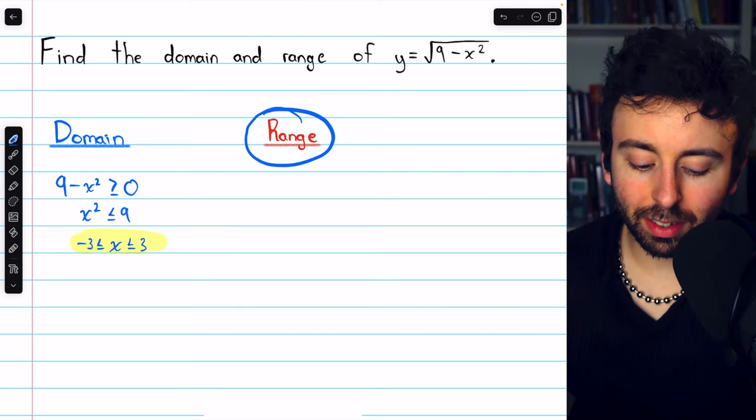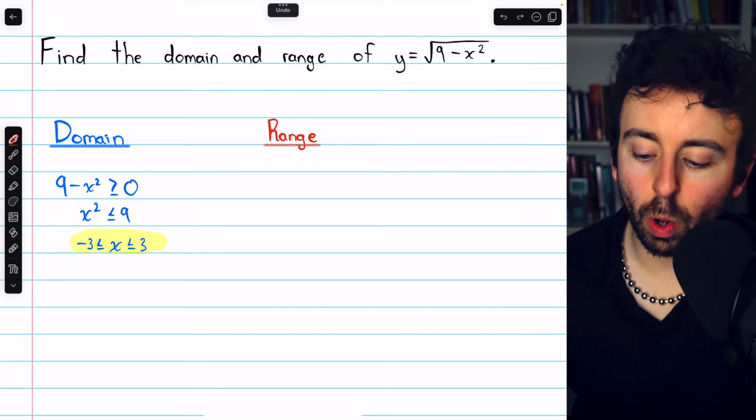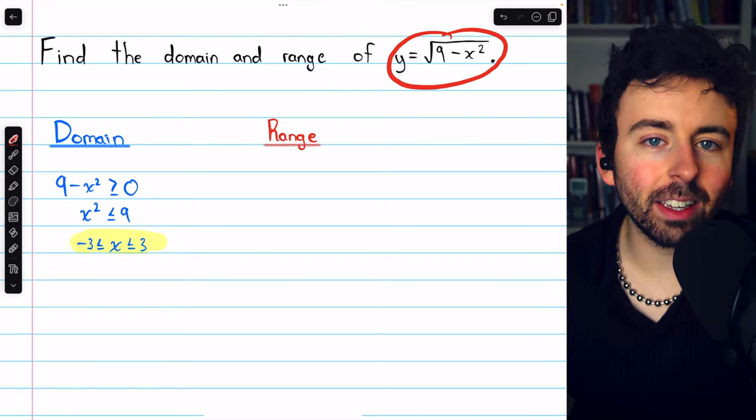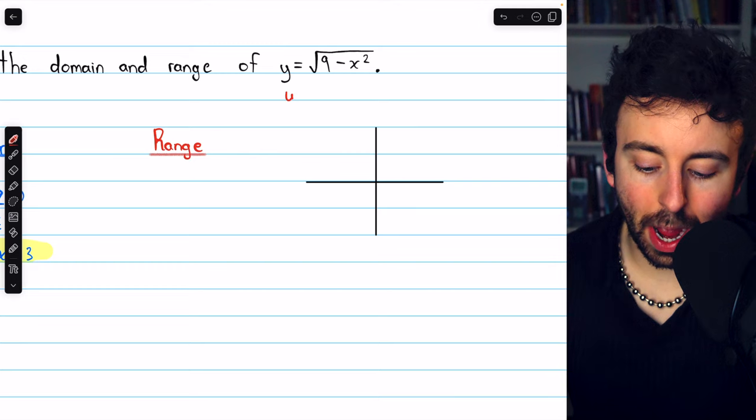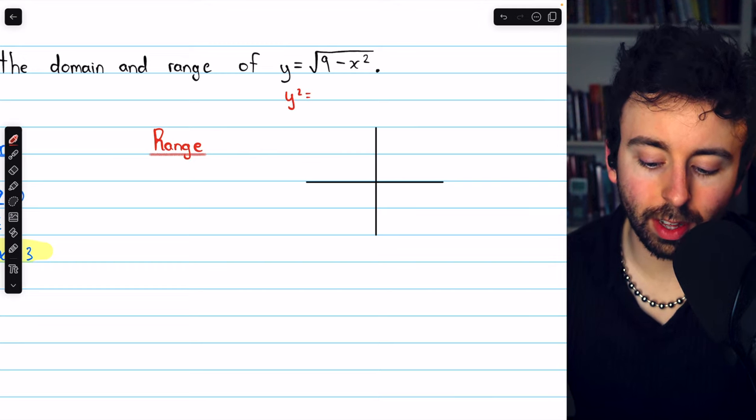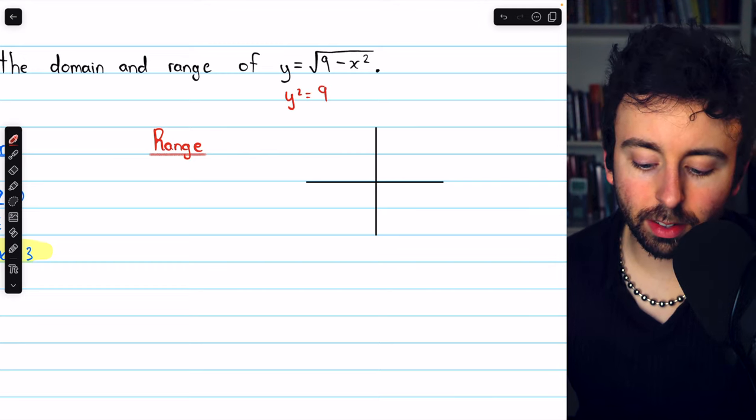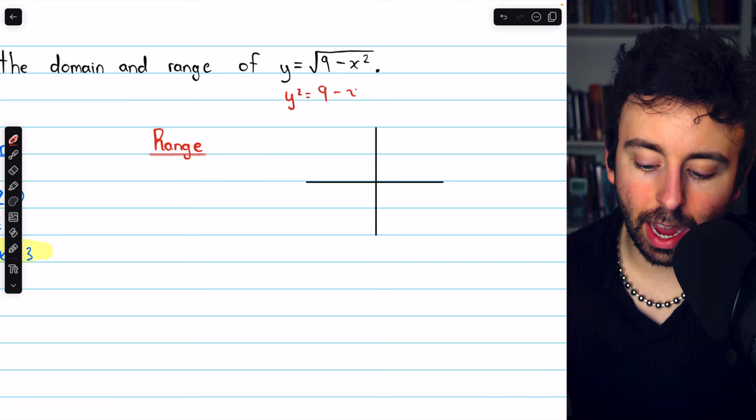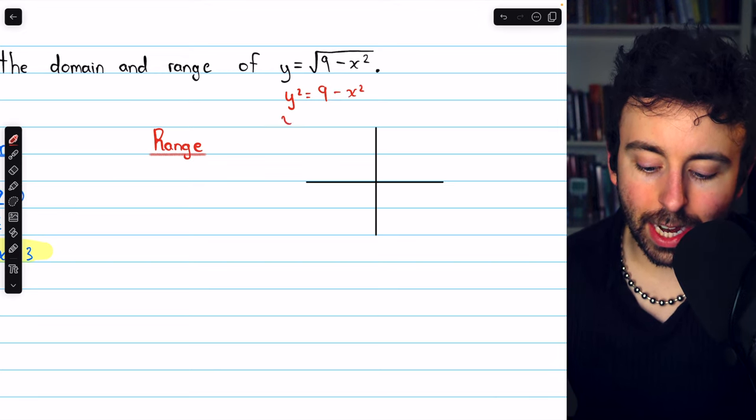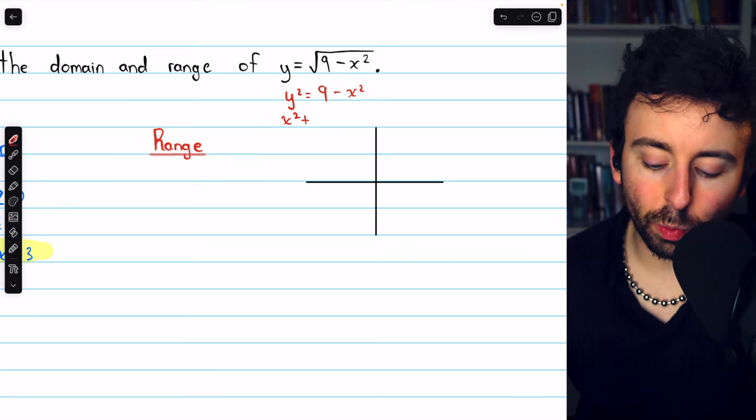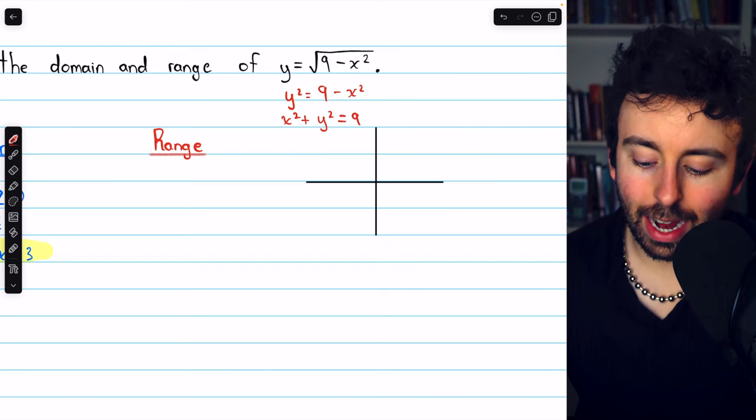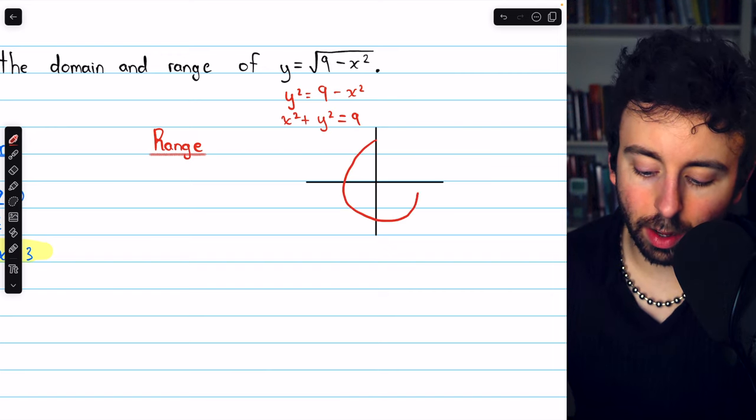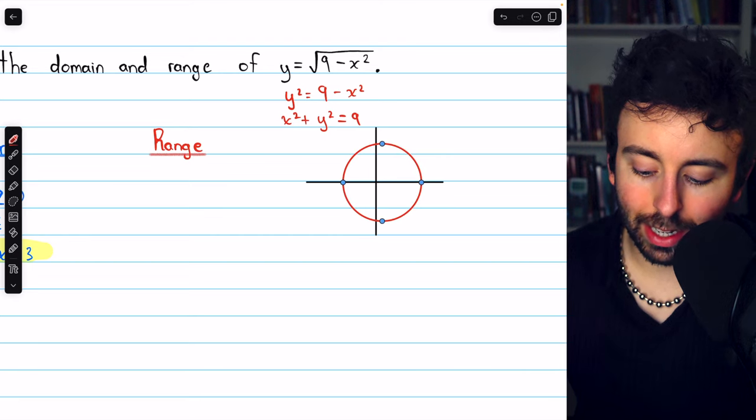Now to find the range, we must ask, what are the possible y values that we could get from this function? It's very easy to answer that question if you happen to know what this function looks like. If you square both sides, you get y squared equals 9 minus x squared. And then adding x squared to both sides, we get x squared plus y squared equals 9. And this is the equation of a circle with radius 3.